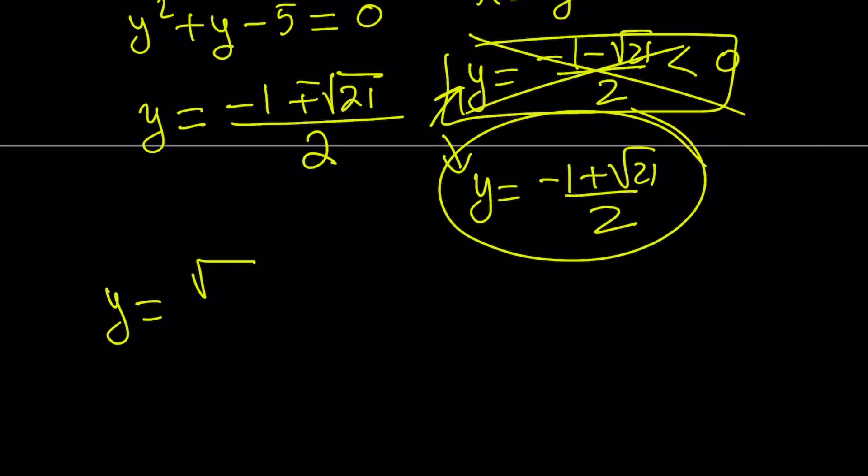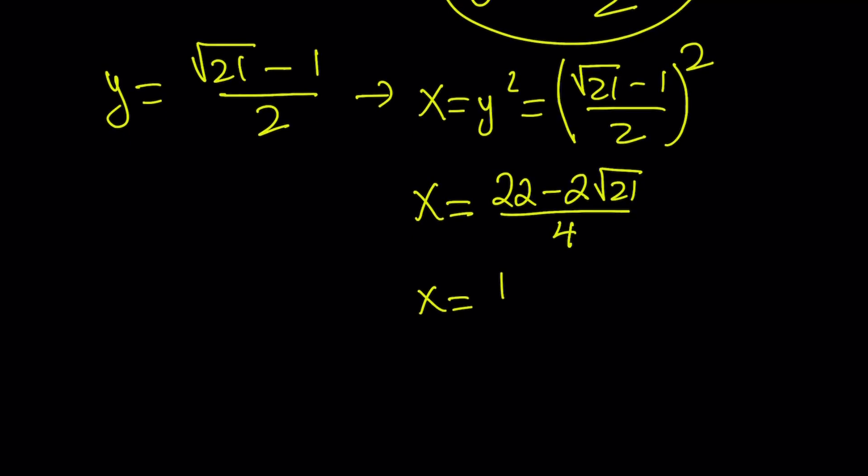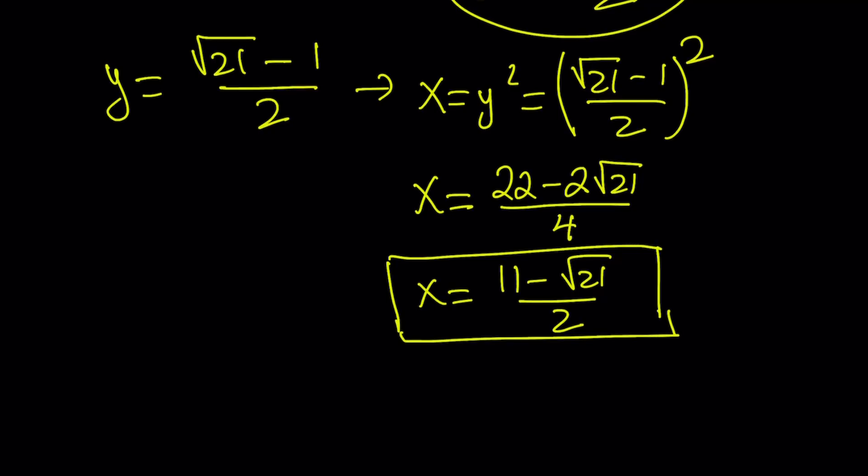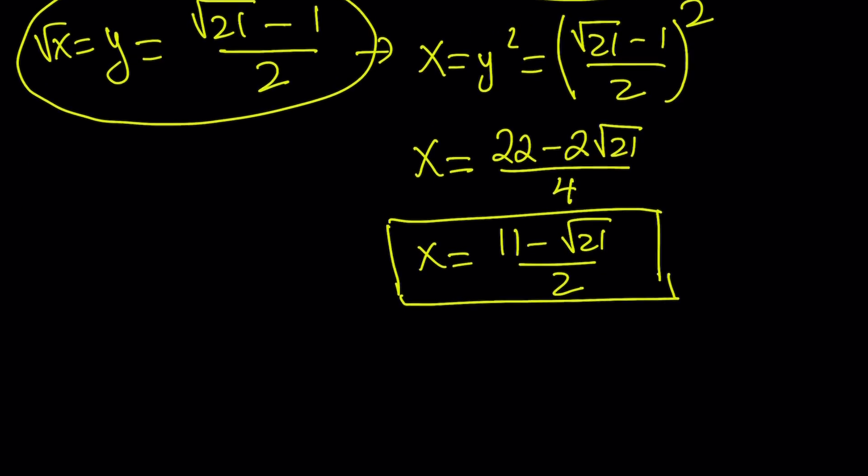Obviously, I'm not interested in y directly. I want to find x. And remember, x equals y squared. So let's go ahead and square this expression. If you square a minus b, you get a squared minus 2ab plus b squared. And then if you put it together, you're going to get 21 plus 1, which is 22, minus 2 times the square root of 21 divided by 4. We can simplify this, divide by 2, and write it as 11 minus square root of 21 divided by 2. So that is the x value we are going to be using. And we also have a value for the square root of x, because y equals square root of x.